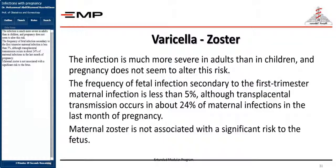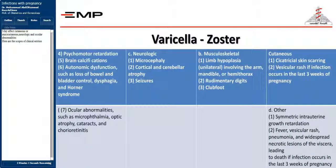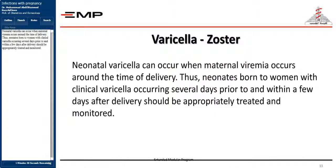Regarding Varicella: the infection is much more severe in adults than in children, and pregnancy does not seem to alter this risk. The frequency of fetal infection secondary to first trimester maternal infection is less than 5%, although transplacental transmission occurs in about 24% of maternal infections in the last month of pregnancy. Maternal zoster is not associated with a significant risk to the fetus. Varicella may affect cutaneous or mucocutaneous, neurologic, and ocular abnormalities. Neonatal varicella can occur when maternal viraemia occurs around the time of delivery; neonates born to women with clinical varicella occurring several days before and after delivery should be appropriately treated and monitored.